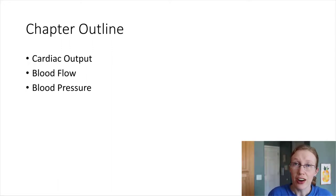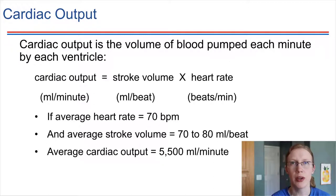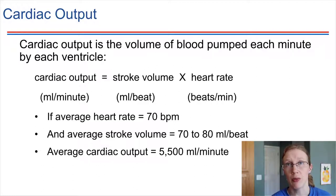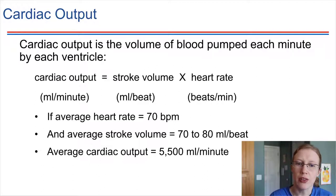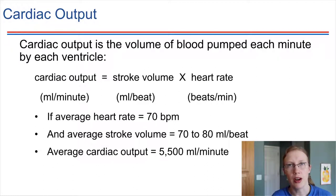Starting with cardiac output. Cardiac output is a measure of how much blood is pumped out of the heart over some period of time, specifically in one minute. Cardiac output is a result of two things: the stroke volume, which is how much blood leaves the heart per beat, and how frequently the heart is beating — the heart rate, in beats per minute. If we take those two things and multiply them together, we will get the cardiac output.